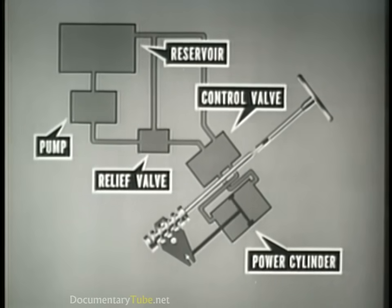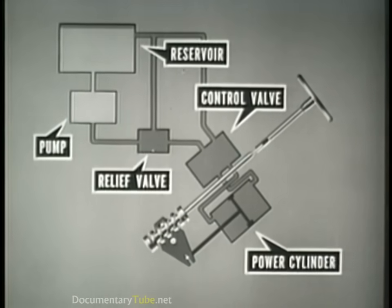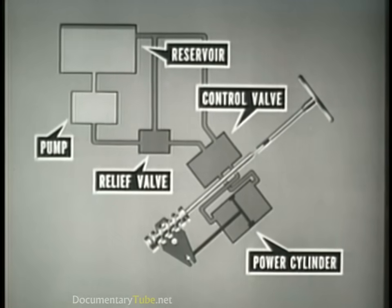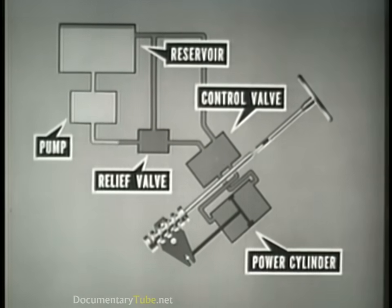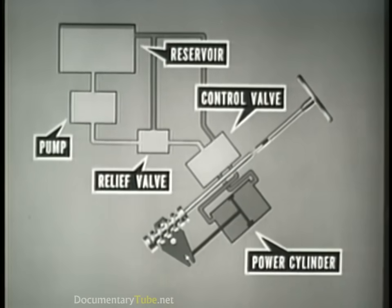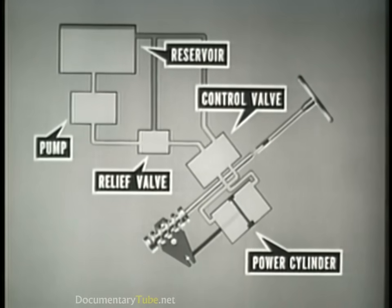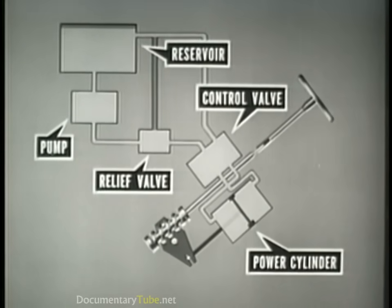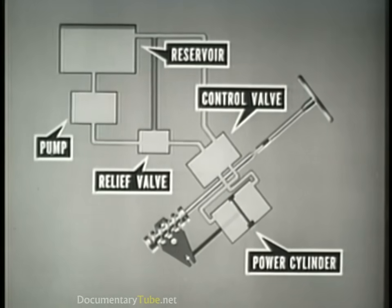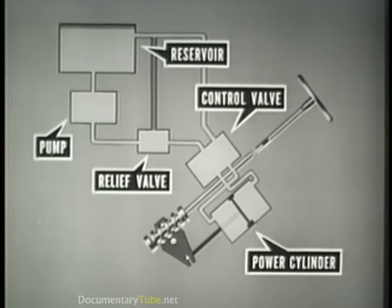Let us view the five major components of the hydraulic system as they operate progressively to deliver the steering assist. The reservoir supplies fluid. The pump, driven by the engine, delivers the fluid under pressure to the relief valve and control valve. The control valve, actuated by the steering shaft, directs the fluid to the power cylinder. The power cylinder converts hydraulic pressure into mechanical force by means of a piston.